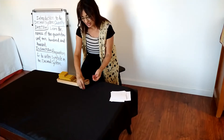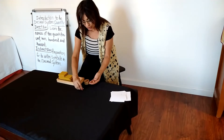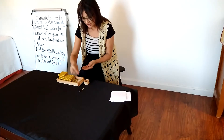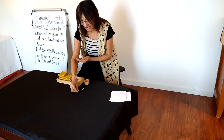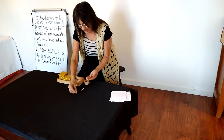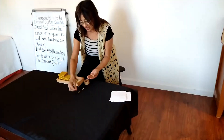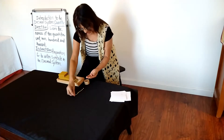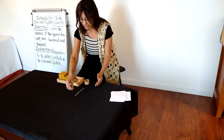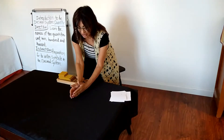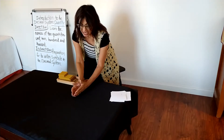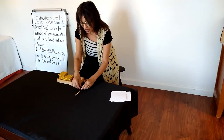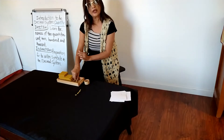1 unit, 2 units, 3 units, 4 units, 5 units, 6 units, 7 units, 8 units, 9 units, and 10 units. So 10 units make what? 10 units make 1 ten-bar. So I already have 1 ten-bar here.